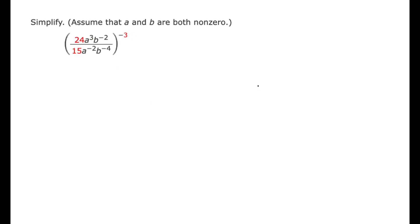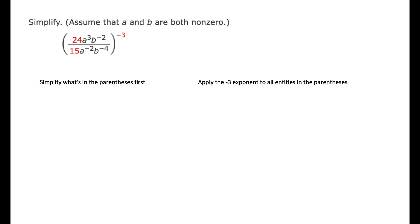One way would be to simplify what's in the parentheses first, and I'll show that method. However, we don't have to follow PEMDAS here because we have some advanced exponent rules that we could apply instead. So the other approach would be to apply the negative 3 exponent to all entities in the parentheses. I'll show both methods.